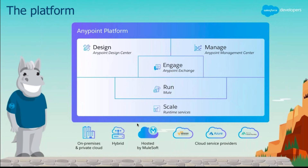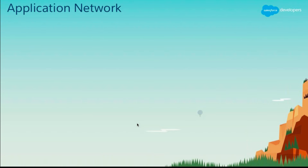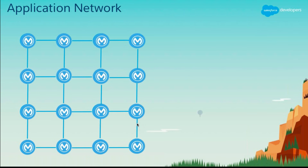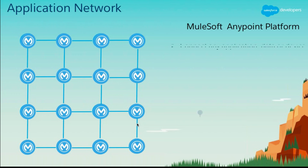AnyPoint Exchange sounds a lot like AppExchange — and we will discuss that shortly. Now let's understand the term 'application network': many systems connected to other systems through integrations. This collection of integrations and systems together is called an application network. With MuleSoft AnyPoint platform, we are going to create a network of integrations.